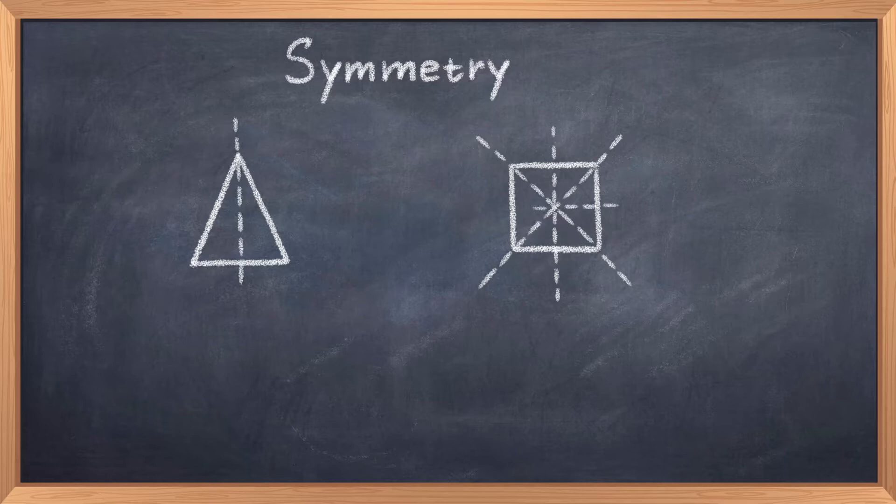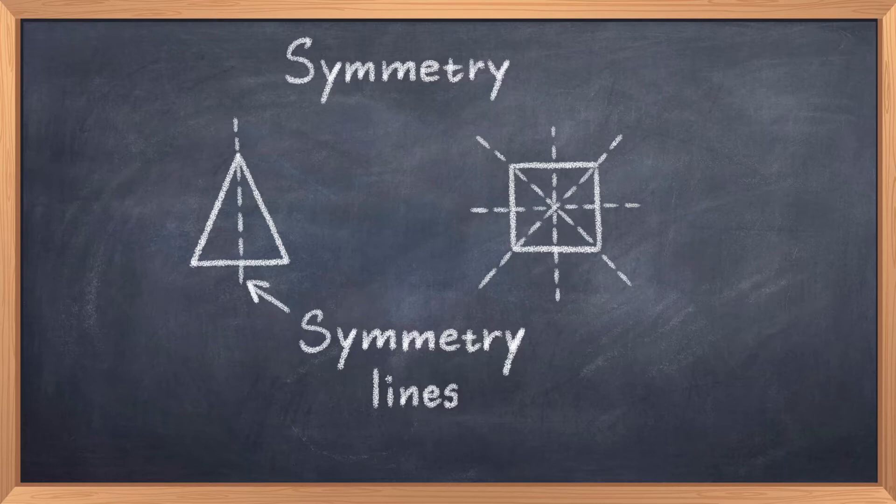But let us consider a slightly more complex example to make sure we all get it. We can consider a square. A square has four symmetry lines, two diagonally across the corners, one vertically and one horizontally. One can also consider other polygons with more symmetries or a circle with infinite symmetries. But let us get to C, P and T symmetry.